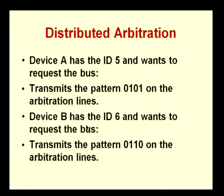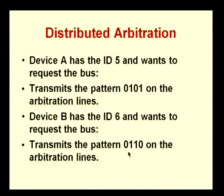Let us take a specific example. Device A has ID 5 and device B has ID 6; both want to request access to the bus. Both will assert the bus arbitration signal and put out their corresponding patterns. Device A will transmit the pattern 0101 on the arbitration lines; device B will transmit the pattern 0110. The logical OR of these two is 0101 OR 0110, which gives 0111. That is the pattern that will appear on the bus.